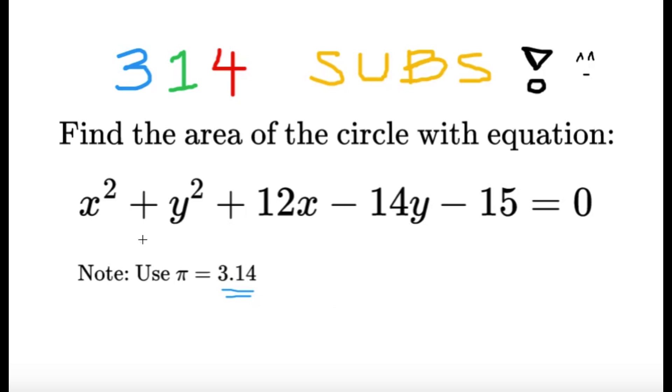Now the circle is currently in the general form, but since we can apply our completing the square skills, let's change this into the center radius form so we can easily get the area via the radius. So let's do that.